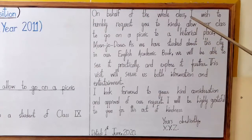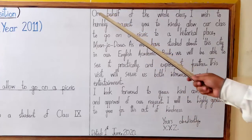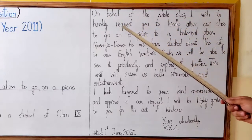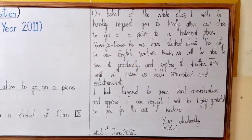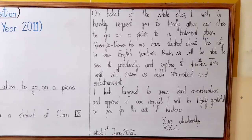On behalf of the whole class — as you are writing this application not as a personal request but a collective request from the whole class — you add this phrase: 'On behalf of the whole class, I wish to humbly request you to kindly allow our class to go on a picnic to a historical place.' This application can fulfill two purposes: either you want to go for a picnic or you want to visit a historical place, so it works for both.